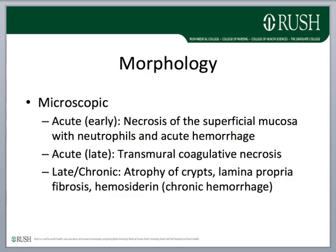Microscopically, in the acute or early phase you get necrosis of the superficial mucosa with neutrophils and acute hemorrhage. Later, the appearance becomes coagulative necrosis of all three layers of the bowel wall because it is a transmural infarct. The late or chronic microscopic appearance shows gradual atrophy of crypts, lamina propria fibrosis, and hemosiderin deposition reflecting chronic hemorrhage.